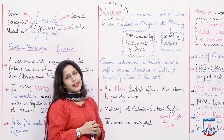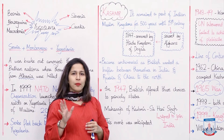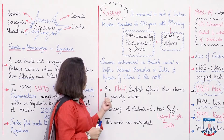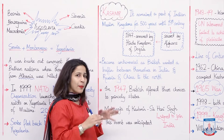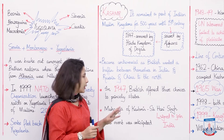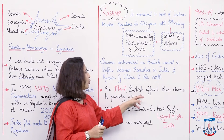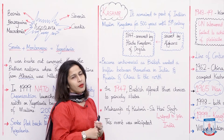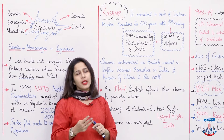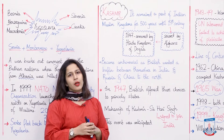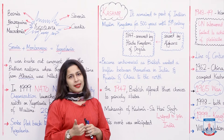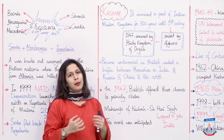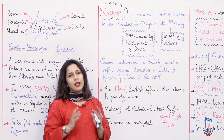When we come to 1947, where the British Empire was prevailing, there was a piece of land that had princely states. There were many princely states which were either part of Pakistan or India. What did the British do? On partition, when the partition plan passed in 1947, they offered three choices to princely states: either you become a part of Pakistan, or India, or you are independent.